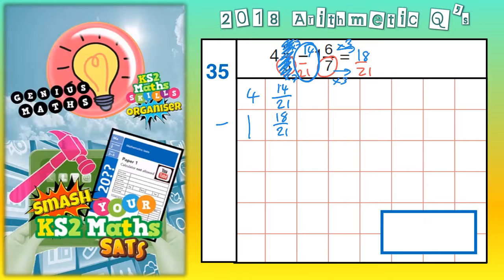That 6 7ths is 18 21ths, so we don't really need the 6 7ths anymore because we're using 18 21ths. So we've got 4 and 14 21ths take away 1 and 18 21ths.